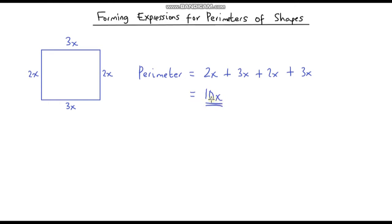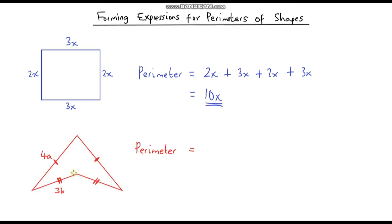Our perimeter expressed as an expression is 10x. Remember, x is our variable and can be any value. If x equals 1, the perimeter is 10 centimetres. If x equals 5, the perimeter is 10 times 5, which is 50 centimetres.